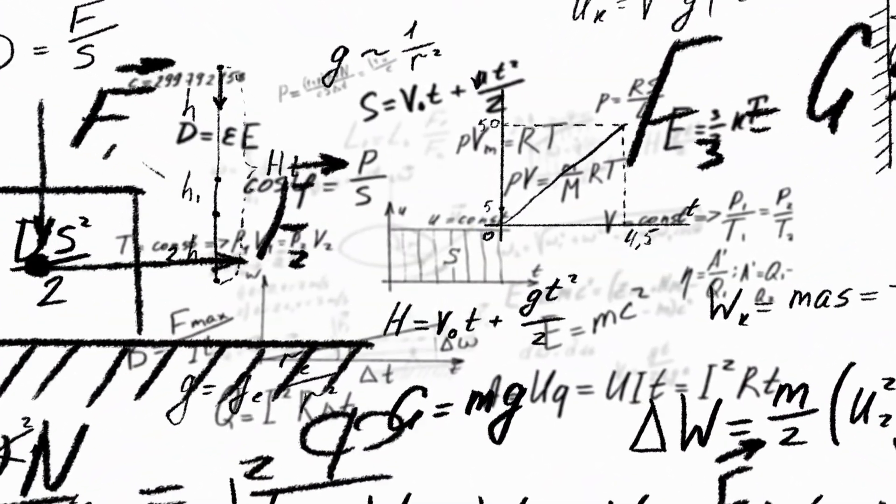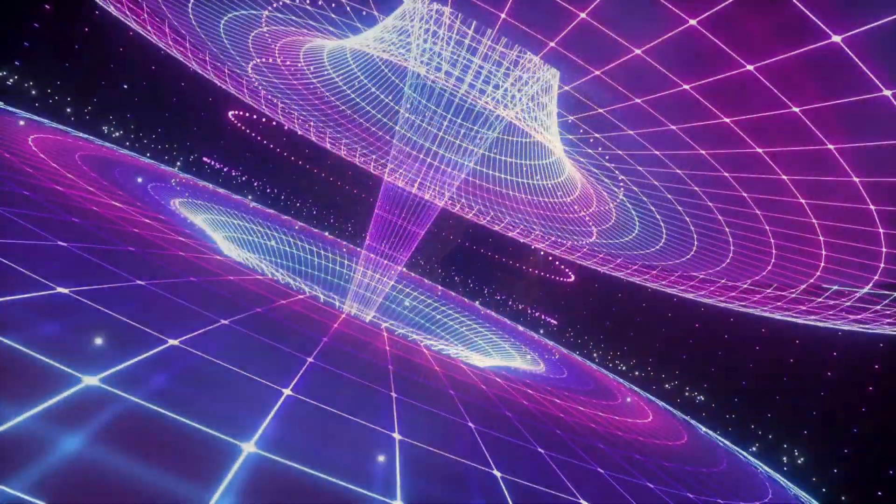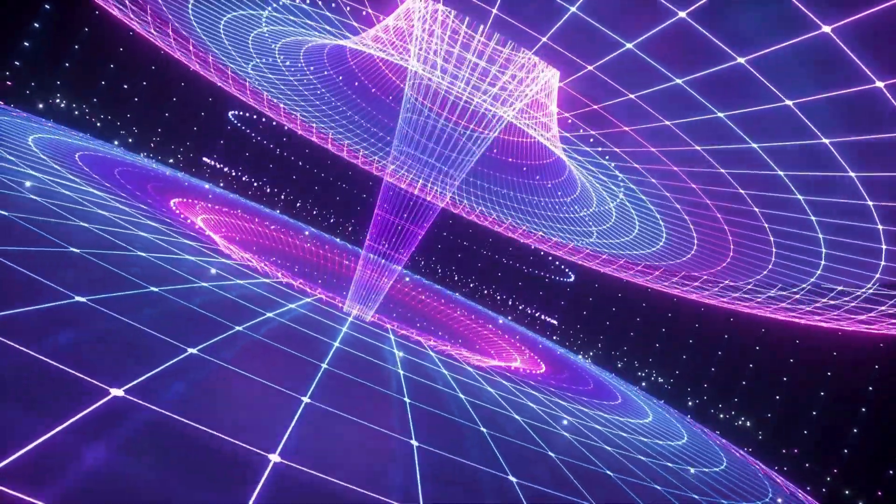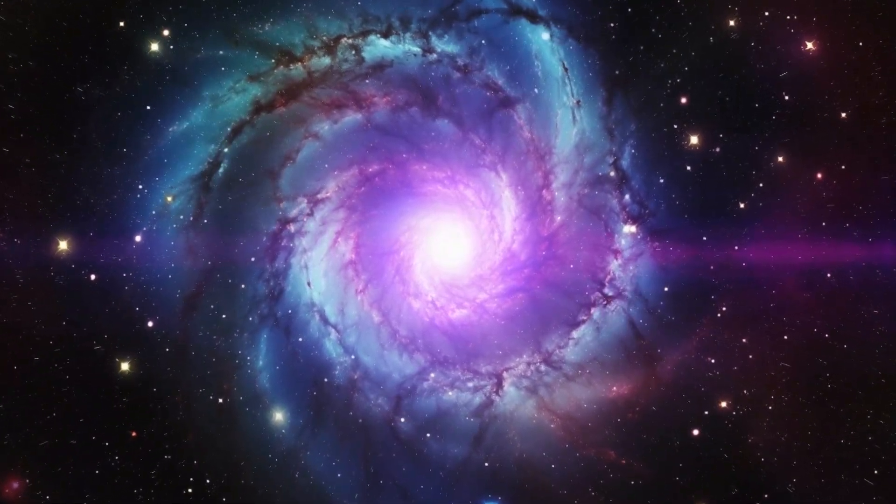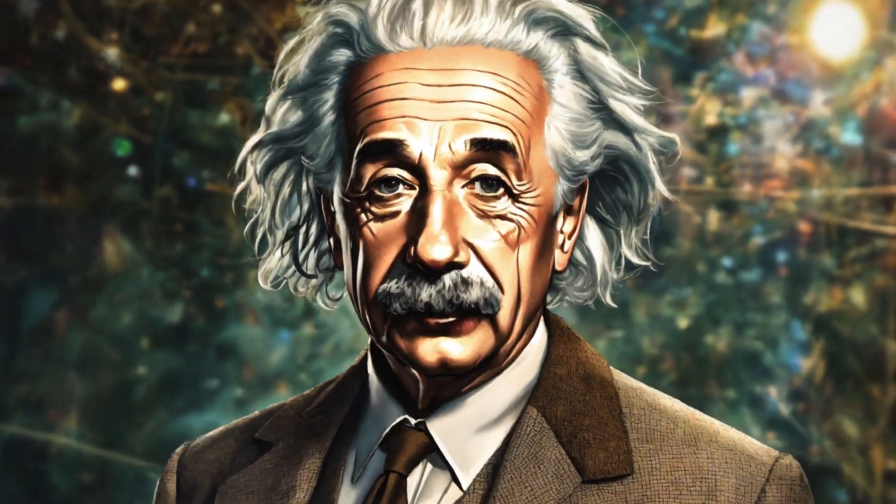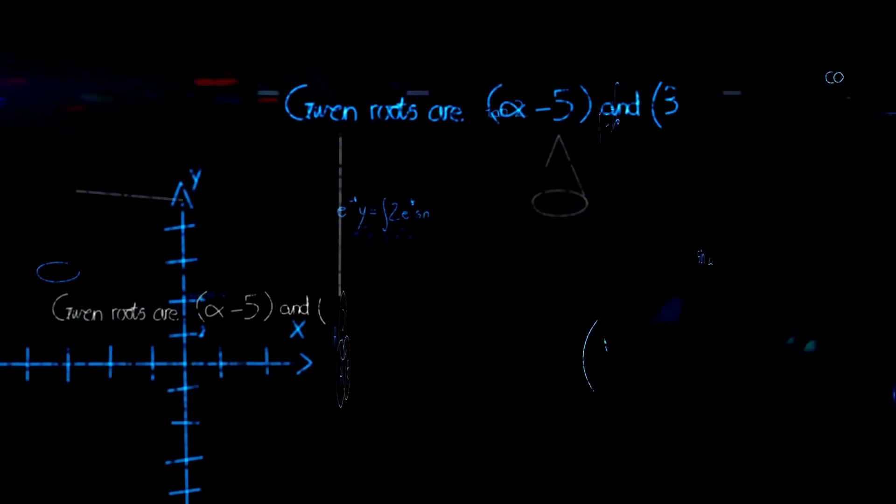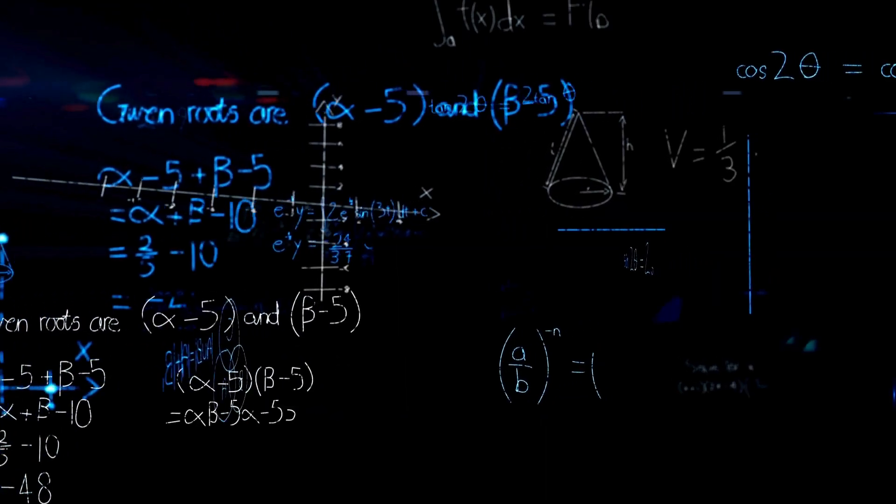Einstein wanted an equation that would unify gravity, electromagnetic force, and the two nuclear forces. He wanted unification of all four forces into one theory, the theory of everything, the God equation.